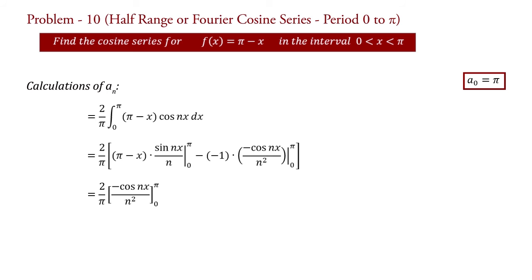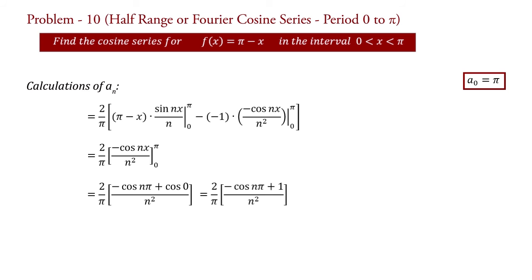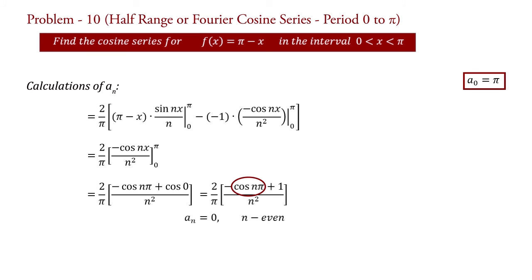Putting the limits: aₙ equal to 2 upon pi into bracket minus cos(nπ) plus cos(0) upon n², which equals 2 upon pi into (minus cos(nπ) plus 1) upon n², since cos(0) equal to 1. If n is even then cos(nπ) equal to 1, so minus cos(nπ) plus 1 equal to 0, therefore aₙ equal to 0 for n even. If n is odd then cos(nπ) equal to minus 1, so minus cos(nπ) plus 1 equal to 2, therefore aₙ equal to 4 upon pi·n² for n odd.